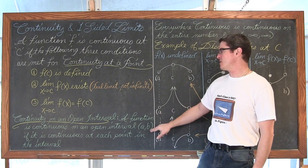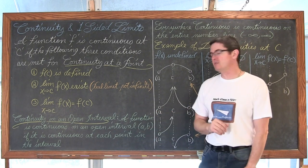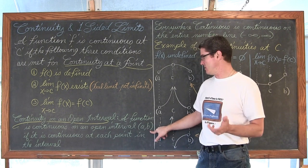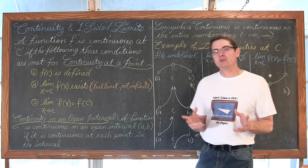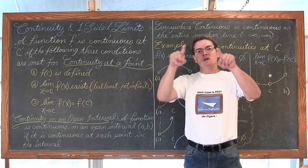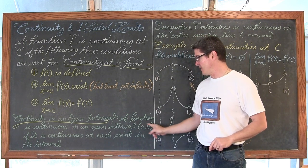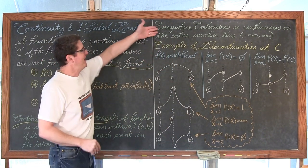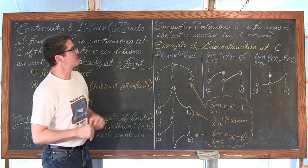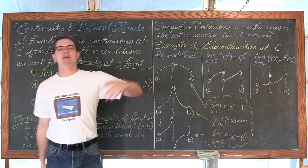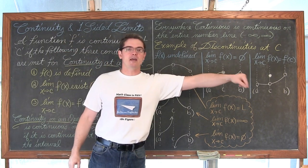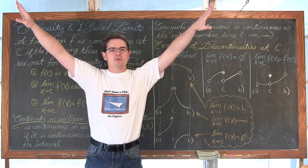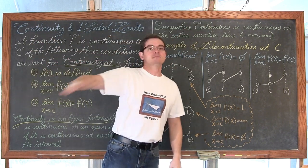Continuity on an open interval: a function is continuous on an open interval (a, b) if it is continuous at each point in the interval. Remember we are using proper interval notation — parentheses denote an open interval. Everywhere continuous means continuous on the entire number line from negative infinity to positive infinity. Think of your sine function, a parabola, or a non-vertical line — all are continuous everywhere.